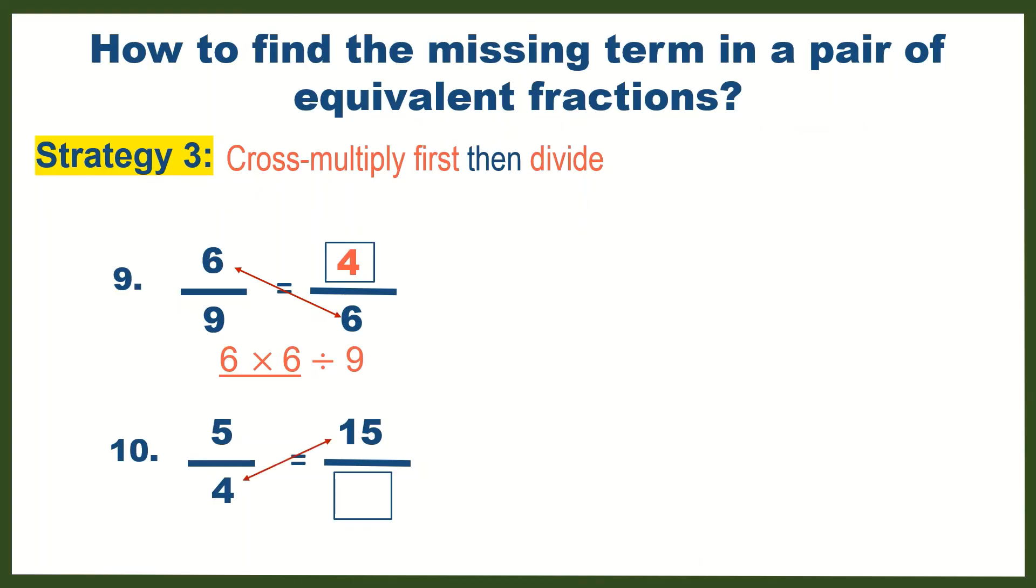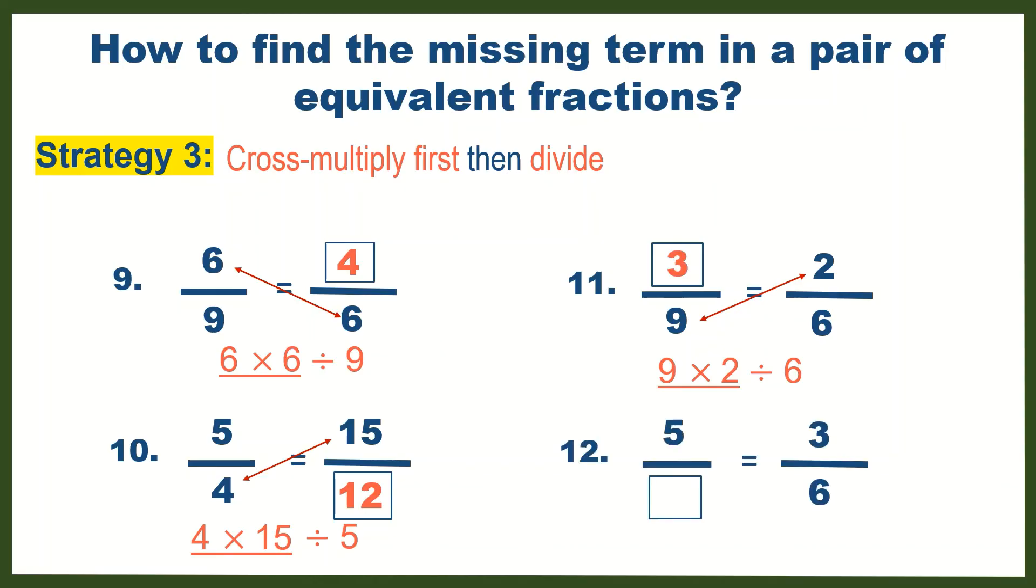Number 10: Cross multiply 15 and 4, which gives you 60, and when you divide 60 by 5, you get 12. Number 11: Cross multiply 9 and 2. The result is 18. Divide 18 by 6, which gives us 3. Number 12: Cross multiply 5 and 6 and divide the result by 3, which gives us the missing term of 10.